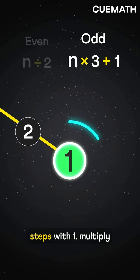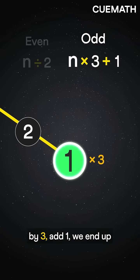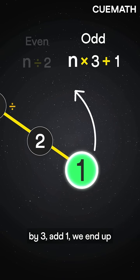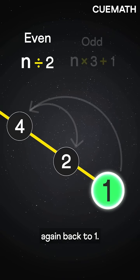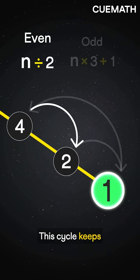Now if we repeat these steps with one, multiply by three, add one, we end up at four, then two, and then again back to one. This cycle keeps repeating.